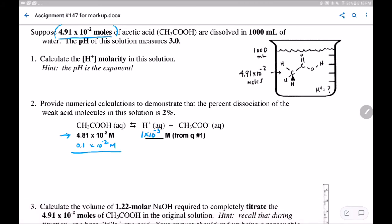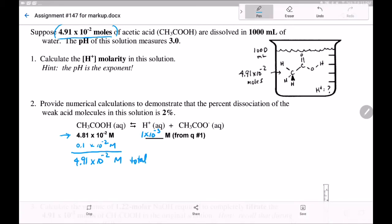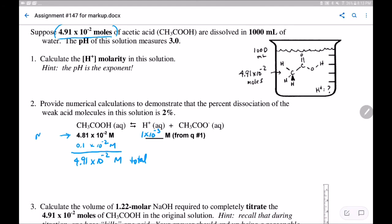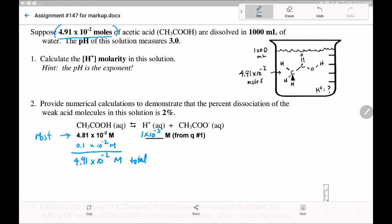If you add these two together, you will end up at the same place this problem started. That's the total. You should see that most of the total is still together, associated, and a small percentage has been dissociated. 1 times 10 to the minus 3 molar out of this total here.